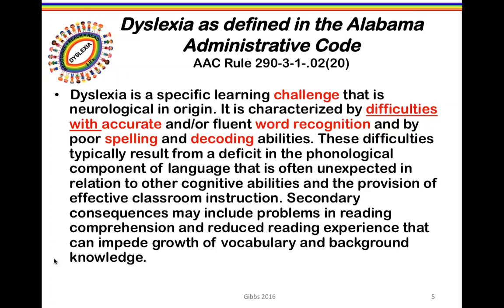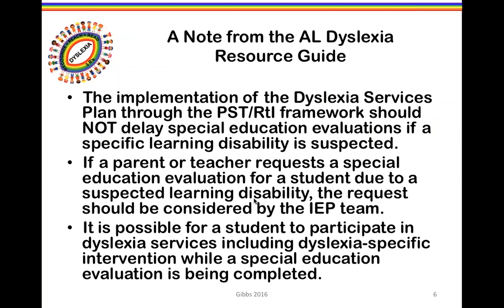Dyslexia is defined in the Alabama Administrative Code Dyslexia Amendments as a specific learning challenge that is neurological in origin. It is characterized by difficulties with accurate and/or fluent word recognition, poor spelling, and poor decoding abilities. These difficulties typically result from a deficit in the phonological component of language that is unexpected in relation to other cognitive abilities and to the provision of effective classroom instruction. Secondary consequences may occur in reading comprehension due to limited reading experience.